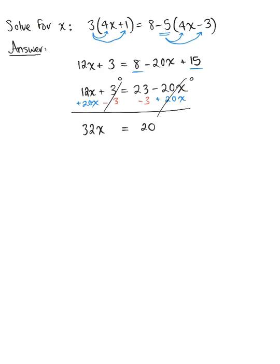And then last but not least here we are going to divide both sides by 32 to isolate that x value. So we have 32 divided by 32 on the left hand side is 1, leaving us with x is equal to 20 divided by 32.